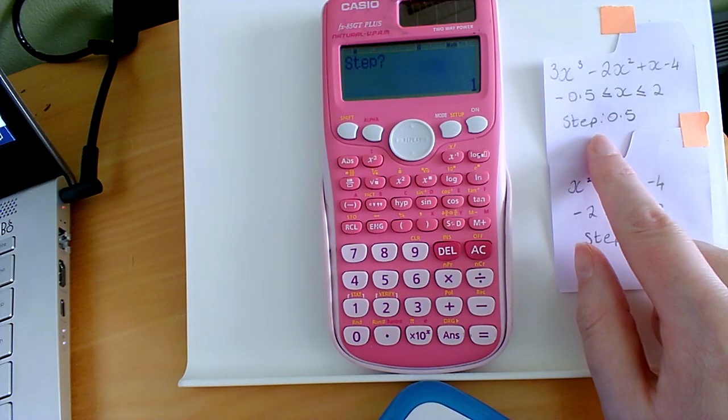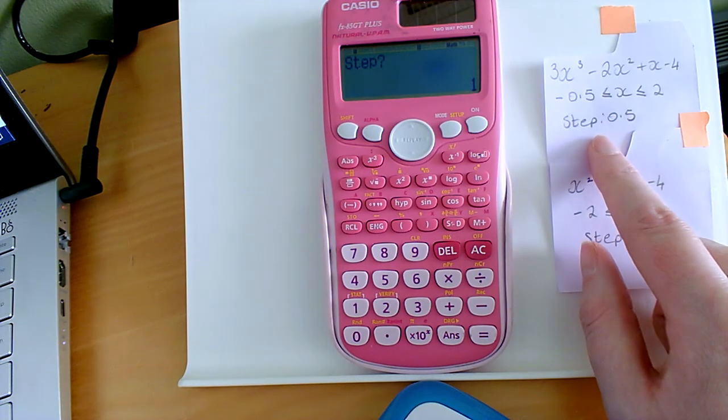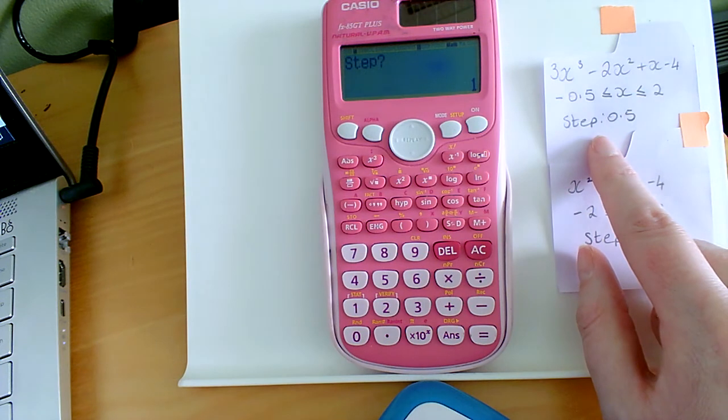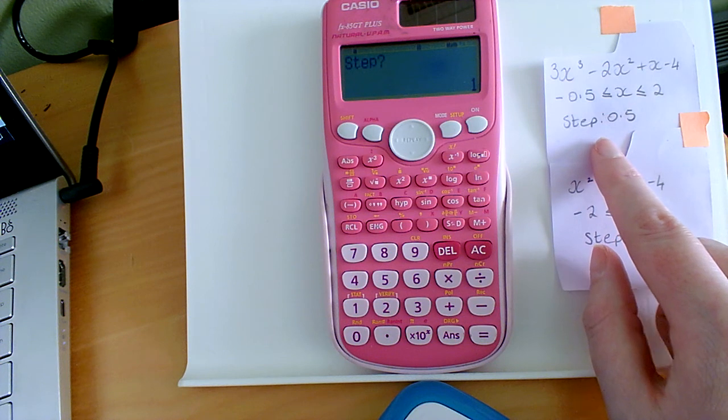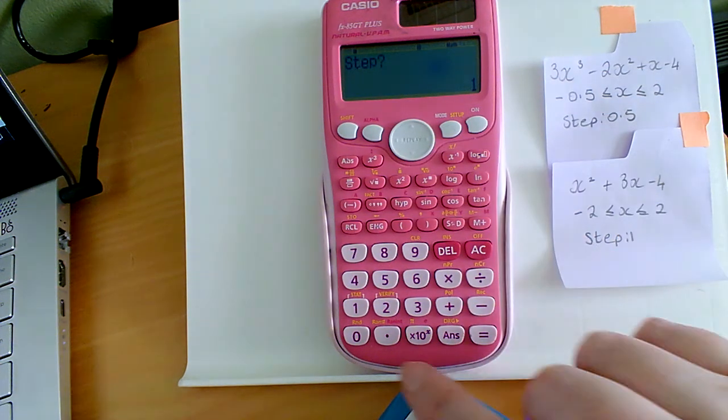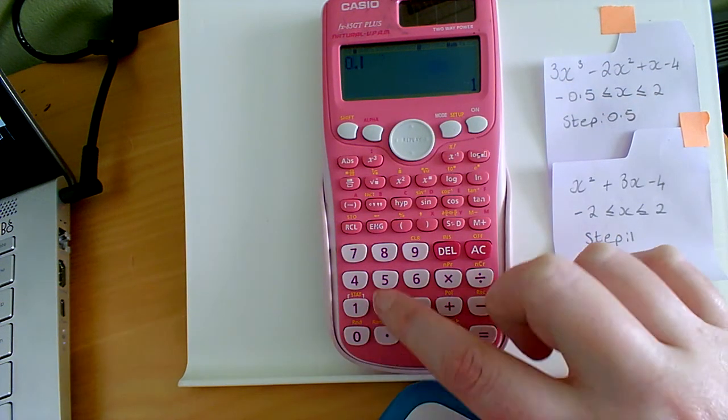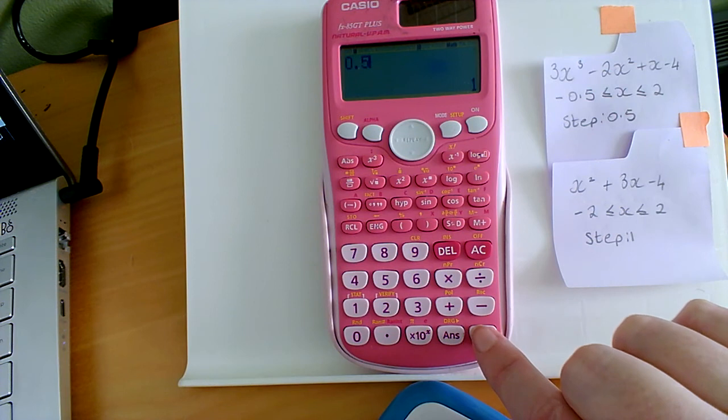My steps, in an exam question, your step will be outlined for you. So usually you'll be given a table and it will be clear from that what step you're going up in. It might be 0.5, it might be 1.5, it might just be 1. So 1 is what appears on the screen here. I'm going to change that to 0.5. I'm then going to press equals.